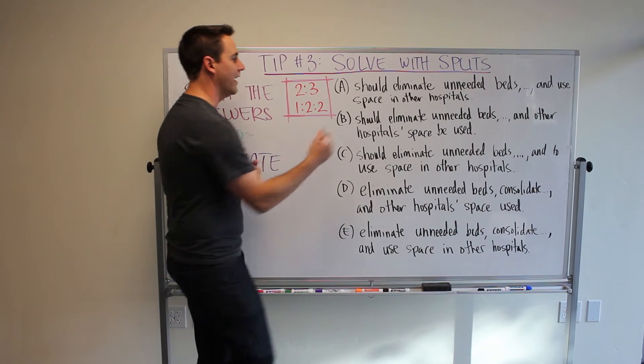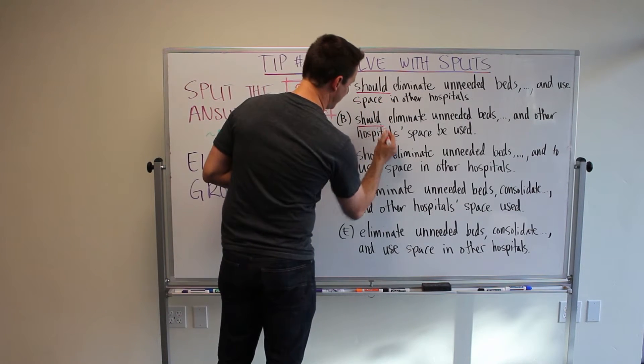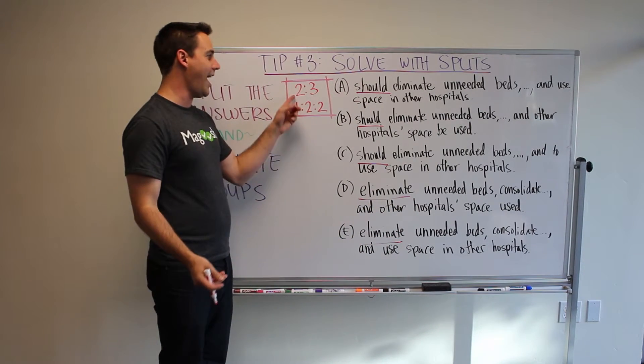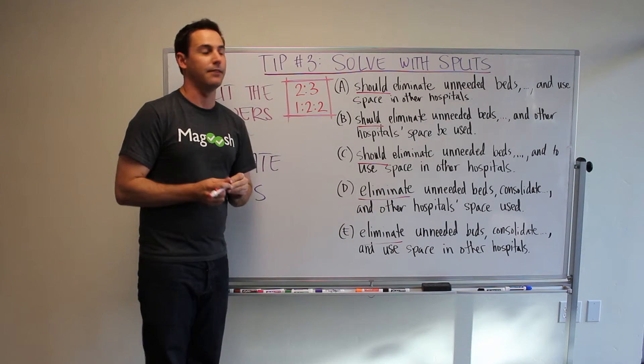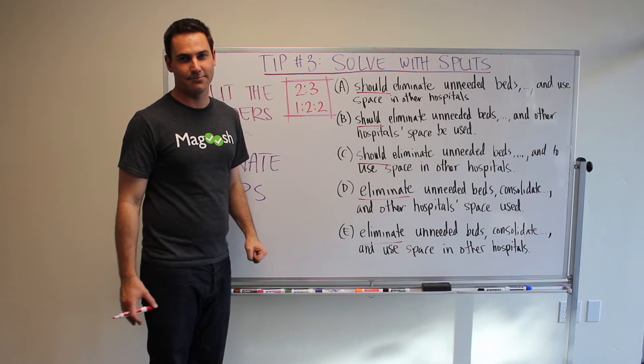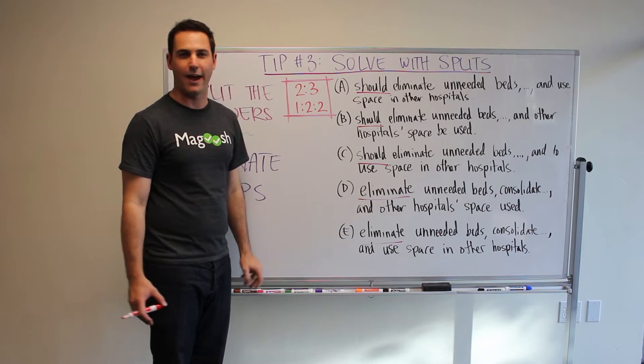And so look for differences between answer choices and similarities. So the first thing I see here is should, should, should, and then eliminate, eliminate. So I have a two, three split. Maybe I know that I need should in this sentence, so I would eliminate D and E very fast.